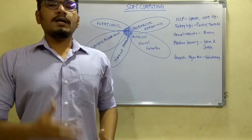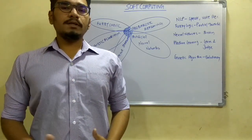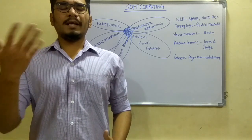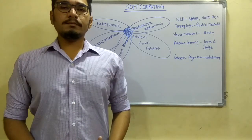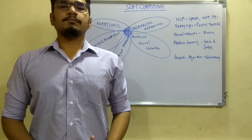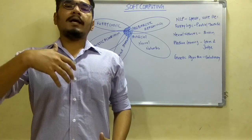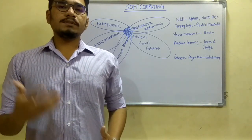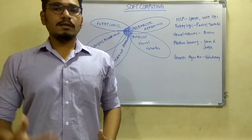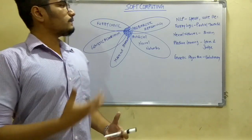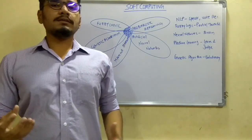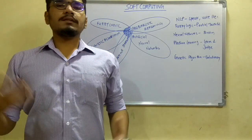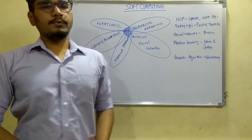What is soft computing? In my artificial intelligence videos, I discussed many algorithms like the A-star algorithm, Bayesian belief networks, constraint satisfaction problems, and many other knowledge representation techniques. All the machine learning that comes under artificial intelligence can be considered as a subset — or in fact the superset — of the soft computing topic.